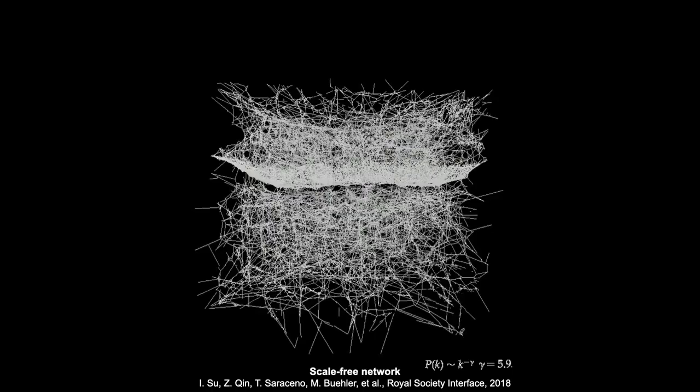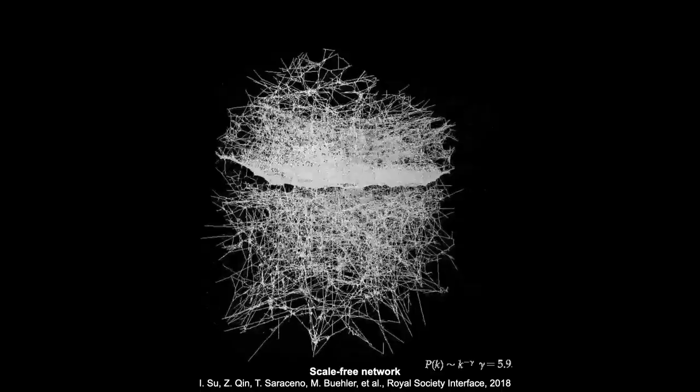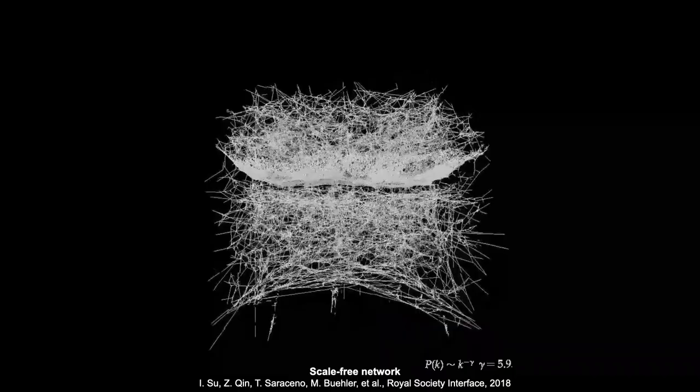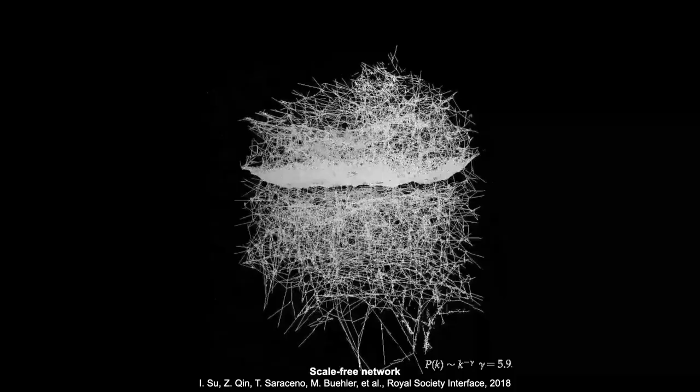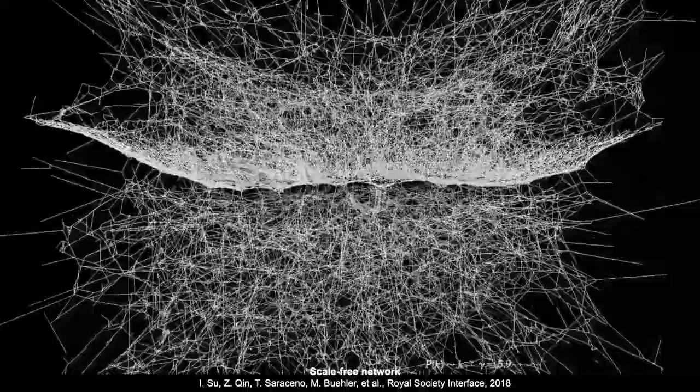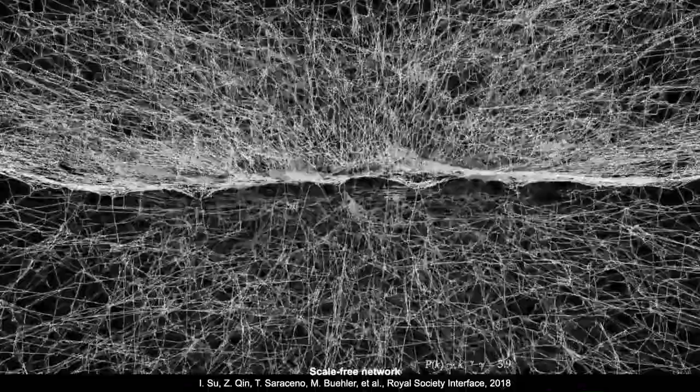If we think about biological structures such as a spider web, we can see they are very detailed, intricate, and complex structures. Looking inside a three-dimensional spider web, there are many internal structures that range from the macro scale all the way down to the nano scale. Flying inside the web structure, we can see that it has very complex architectural features.